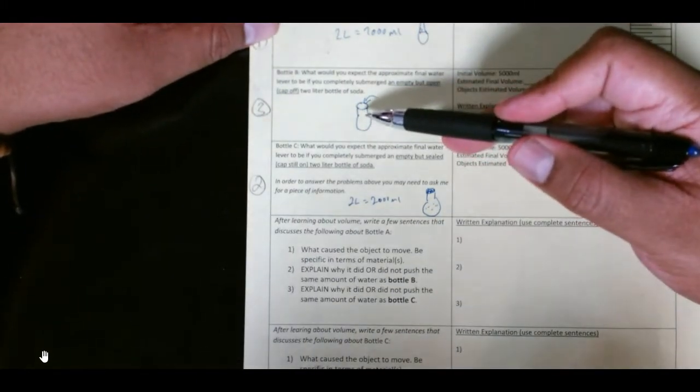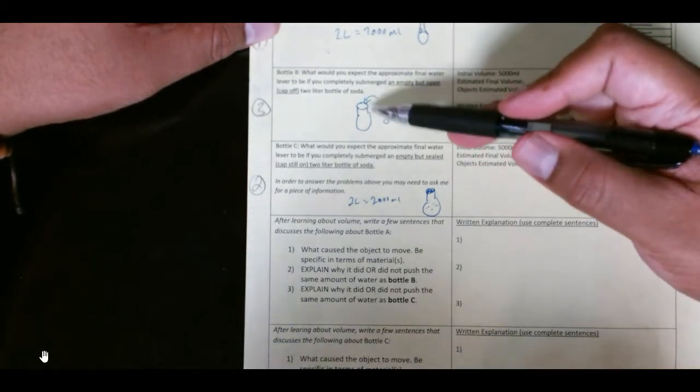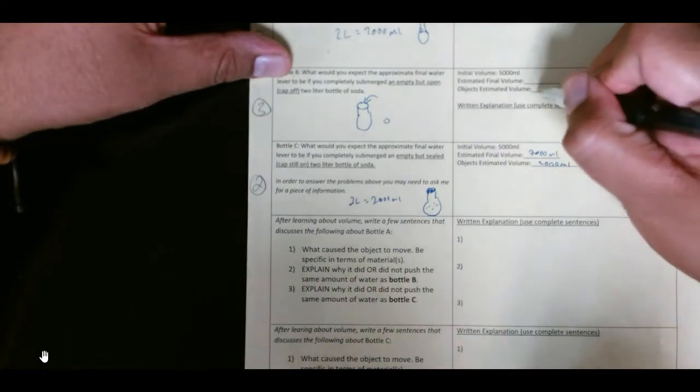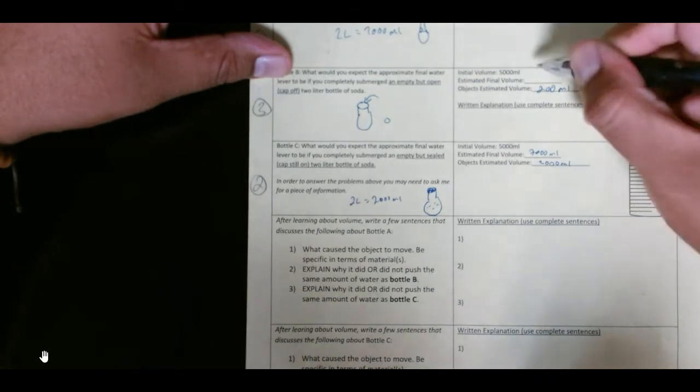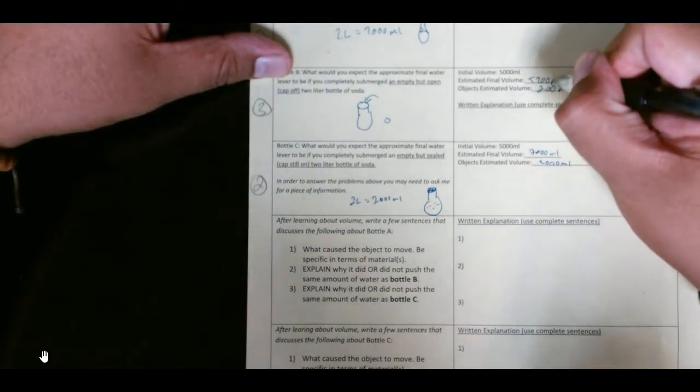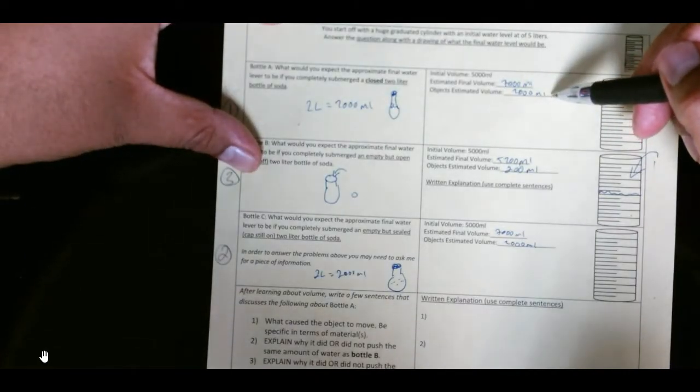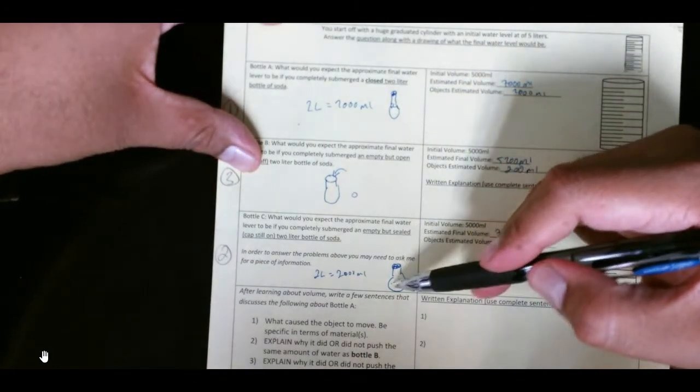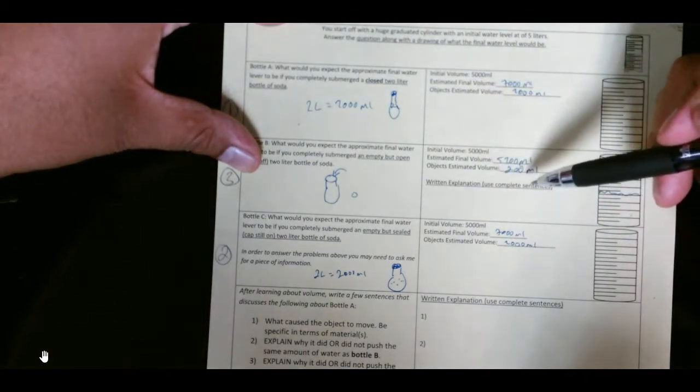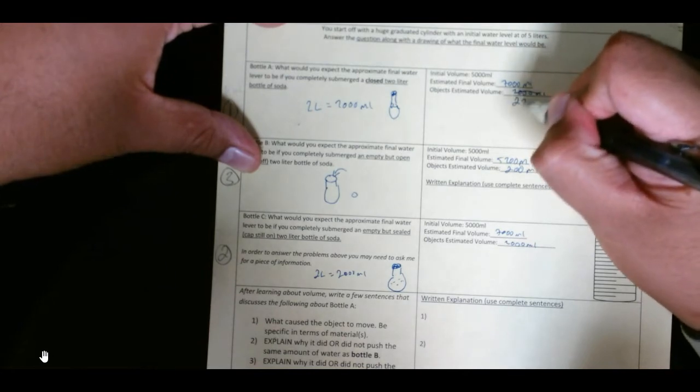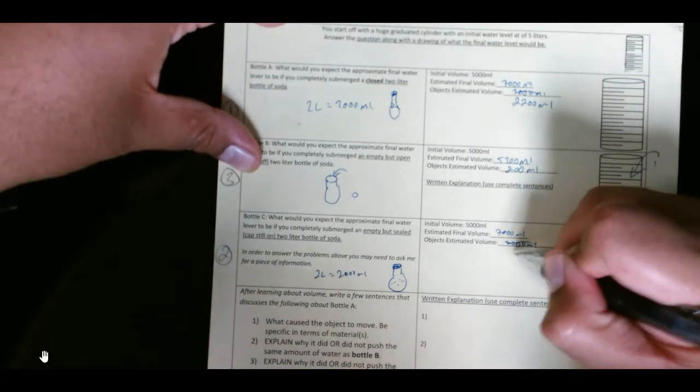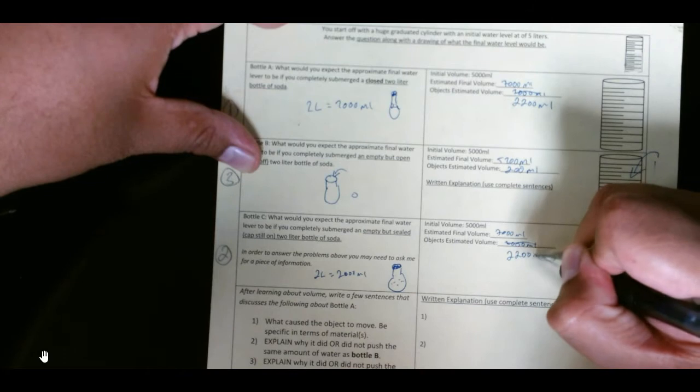So what's going to push the water up? For the question above, you might need to ask me something. You just know how much space fits in here, 2,000 mLs, right, of air or soda, whatever, gummy bears. What you didn't know is how much space the bottle takes up. So the bottle, let's just say the bottle takes up, just the plastic itself, takes up 200 mLs. That would mean it would raise from 5,000 to 5,200 mLs.